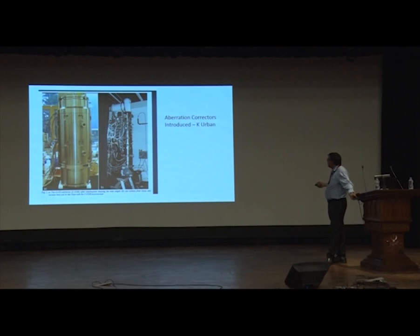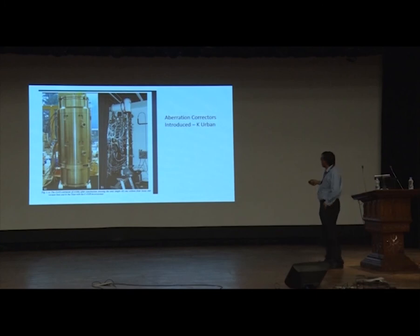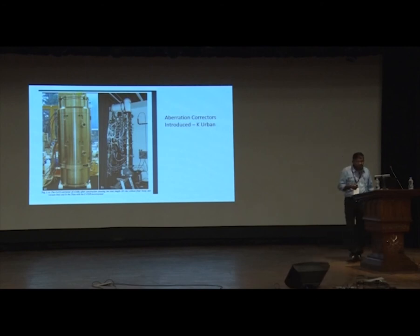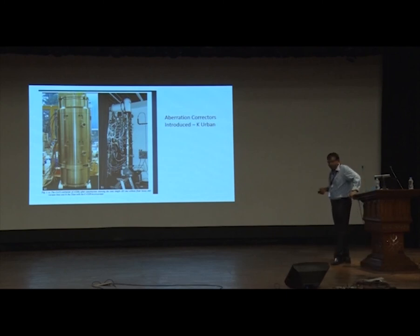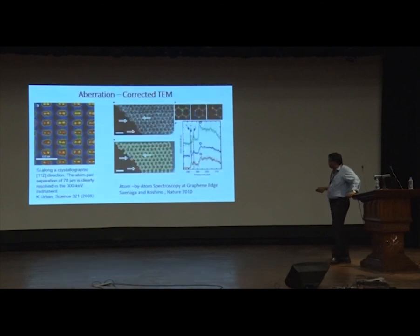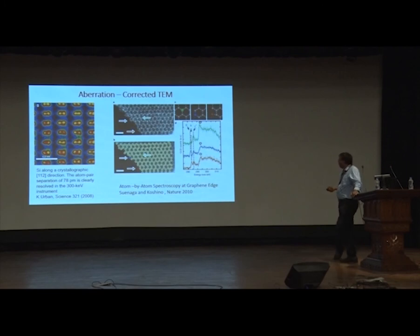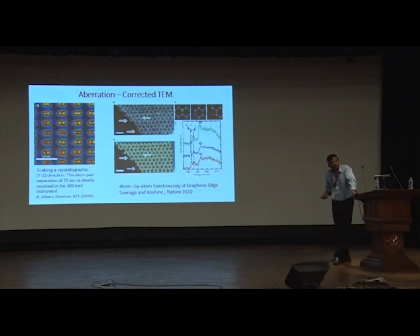These days there are much larger and more expensive aberration double-aberration corrected microscopes. A researcher who developed aberration corrector microscopy narrowly missed the Nobel Prize — the prize went for the use of the technique rather than its development. With aberration correction, one can see silicon dumbbells in the 112 direction and perform single-molecule spectroscopy.